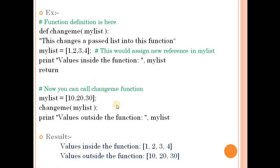We have a passed-by-reference example. We have a function defined with a value — a list with values 1, 2, 3, 4. After that, we are calling that function, and at that time we are given another value. When the function is called with values 10, 20, 30, we print the list before and after. The change in the list reflects back — that demonstrates pass-by-reference.